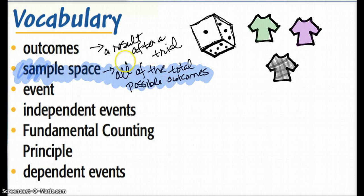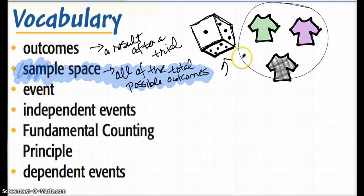An event, however, can be considered the outcome of a trial, but it could be the outcome of one or several trials. So an event could be a combination of things. Let's say I'm going to roll my die and choose amongst my favorite three shirts. That can be an event. What's the probability of me rolling five? How many ways can I roll five and choose a particular shirt? So an event can be one trial or several trials.